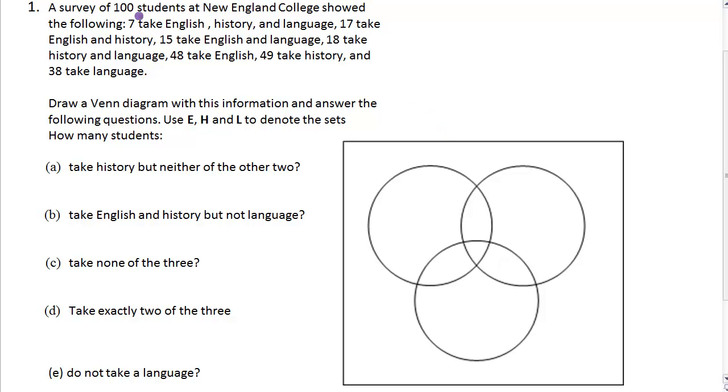We've got a survey of 100 students at New England College. Our universal set is the students at New England College, represented by this rectangle here.